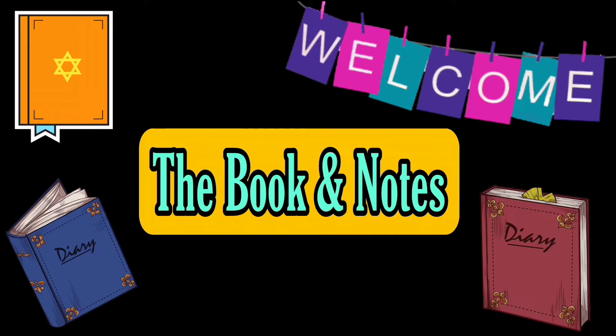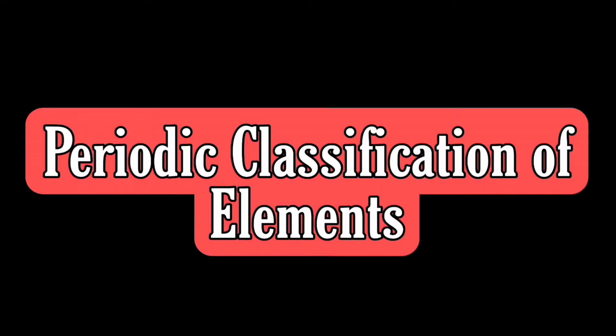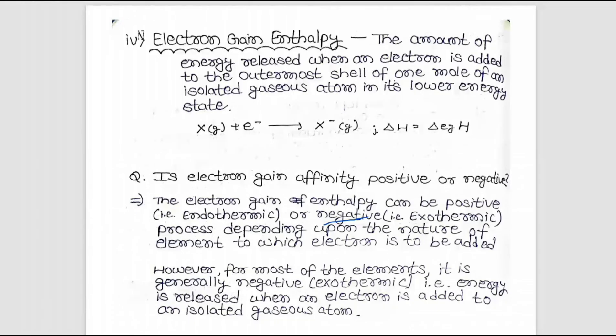Hello everyone, welcome to Book and Notes. This video is Part 6 of Class 11 Chemistry Chapter 3 - the periodic classification of elements. This is the last part, and here we will study electron gain enthalpy.